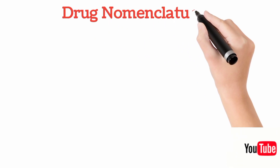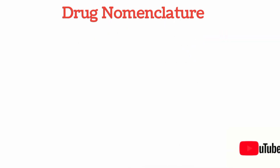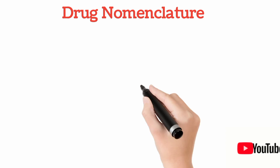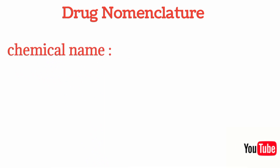Drug nomenclature includes different types of names used in pharmacology. This includes chemical names, generic names, and brand names. We will discuss them one by one.